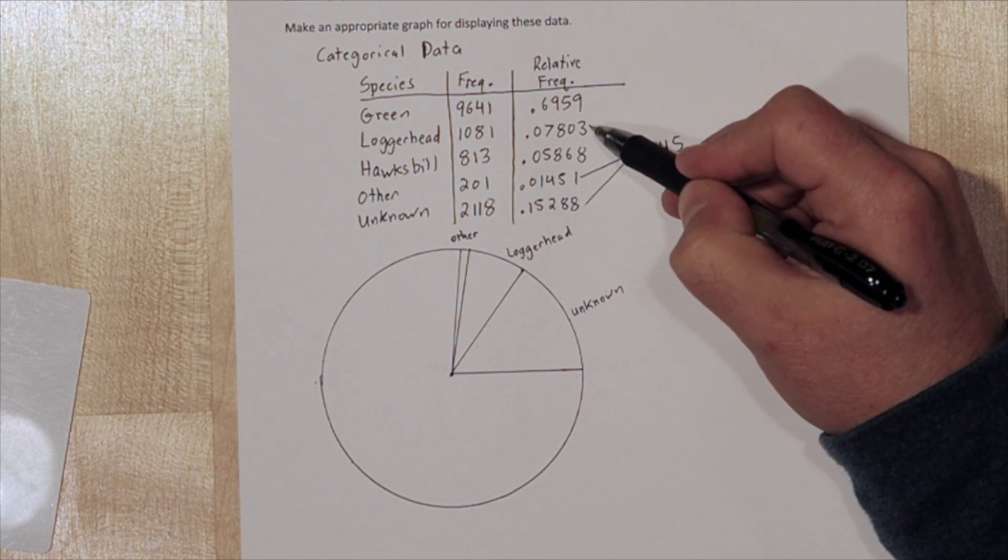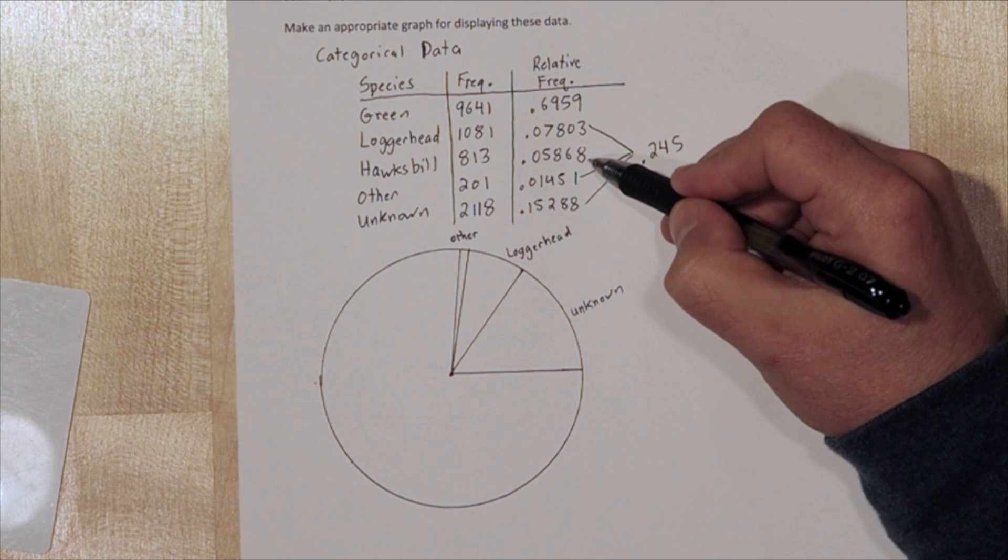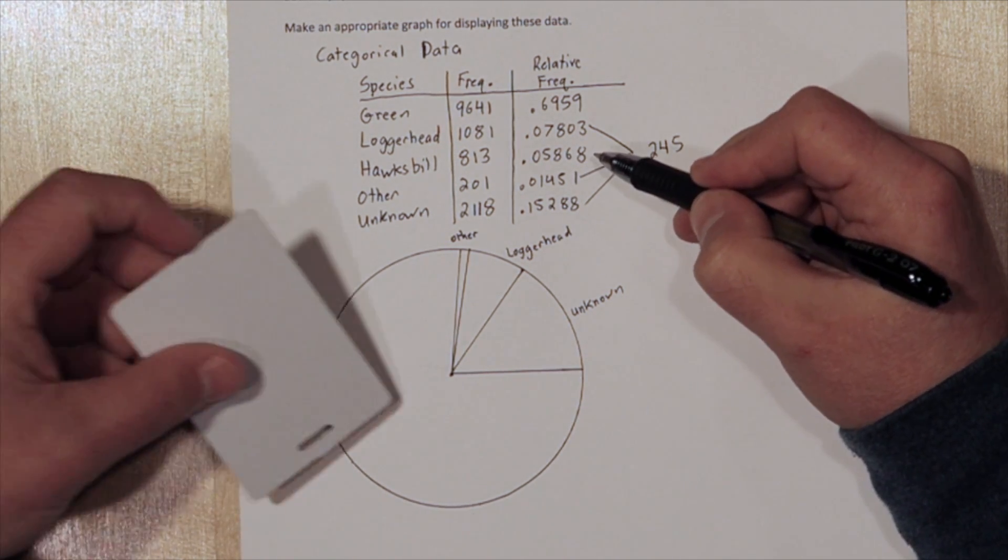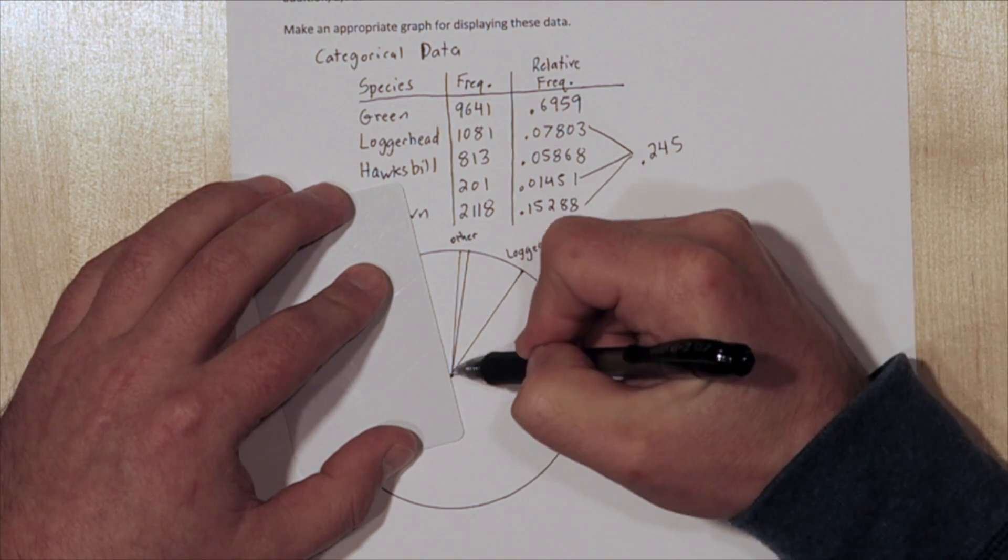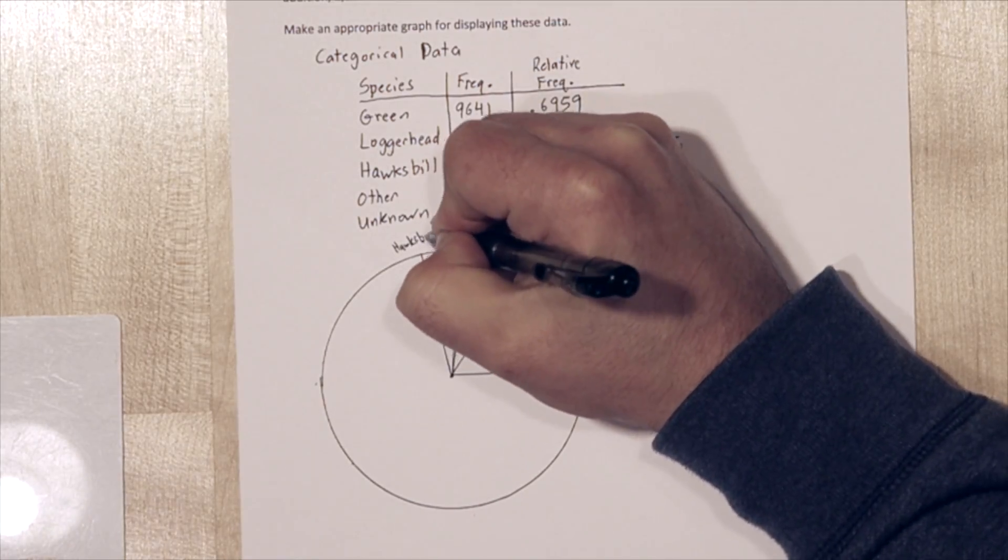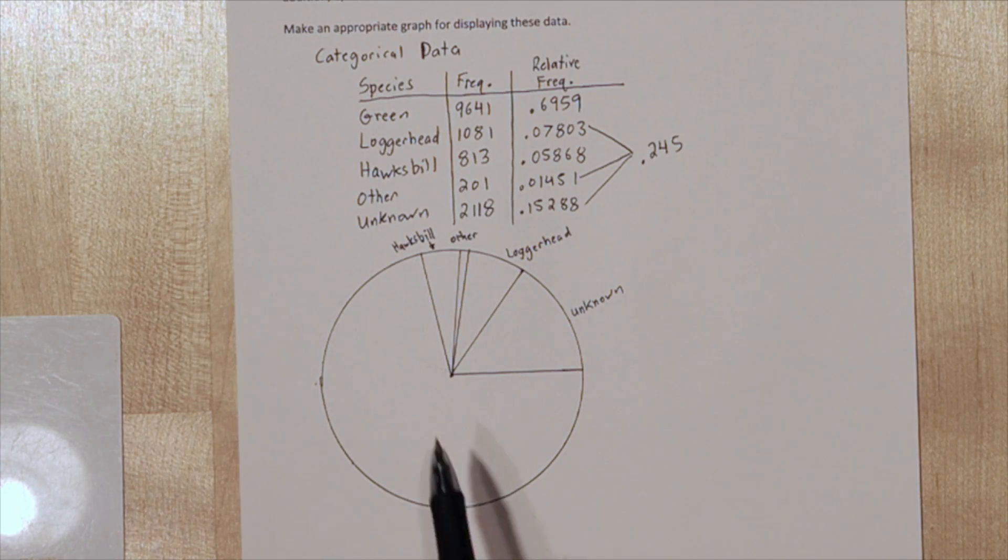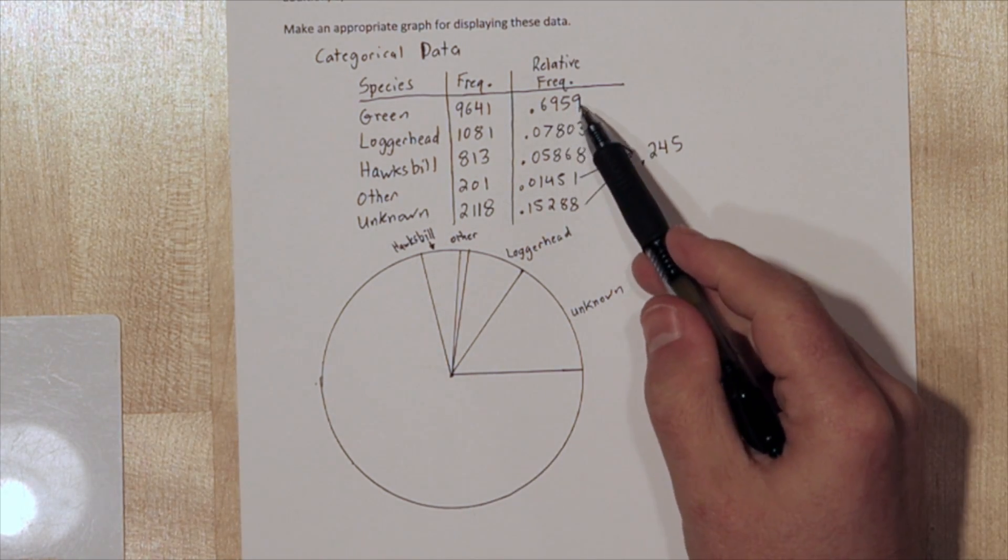Hawksbill is about 6% and loggerhead is about 8%, so hawksbill needs to be smaller than loggerhead. Maybe about that much. So this is hawksbill. Alright, the remaining section is for green, and it does look to be about 70%.